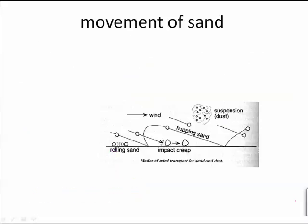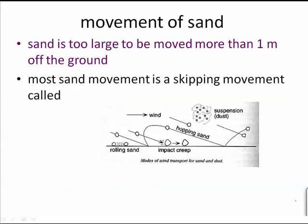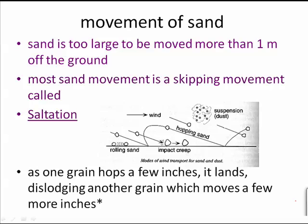Movement of sand. Sand can't be moved more than a meter off the ground, so it moves by a skipping movement called saltation — it hops along, and as it hops a few inches, it lands, dislodging another grain which moves a few more inches as well. Silt and clay, however, can be suspended as dust and can go high into the atmosphere.